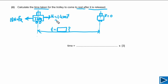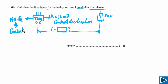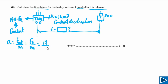Since the resistive force is constant and is the only force acting on the trolley, the deceleration is also constant. We can calculate: a = F_net / m = 18 N / 72 kg = 0.25 meters per second squared.